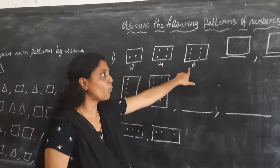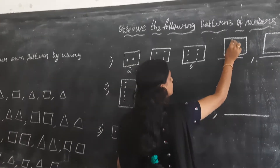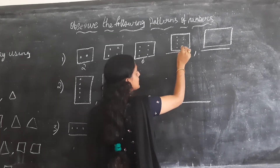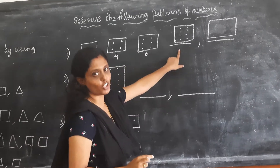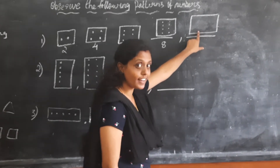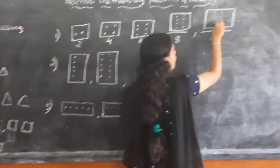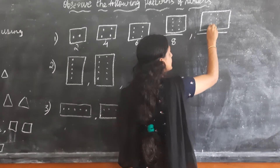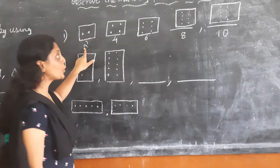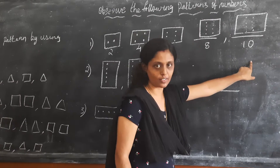Two, four, six — what comes next? We should add two dots again. That is eight dots. And then we should again add two dots, making ten dots. The rule is two is added each time: two, four, six, eight, ten.